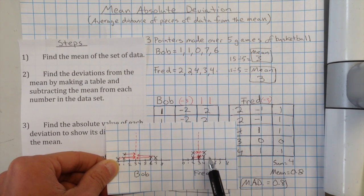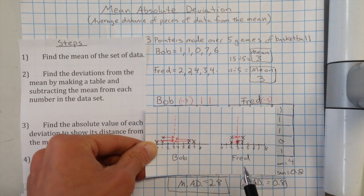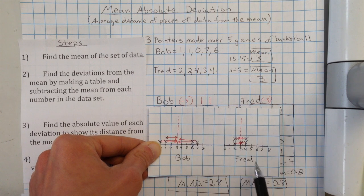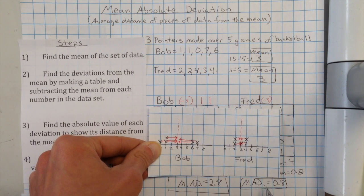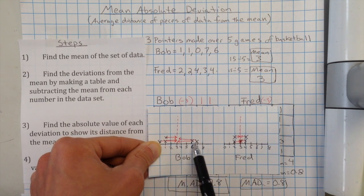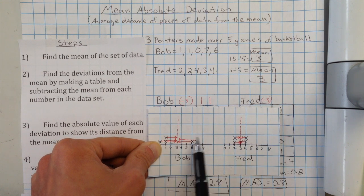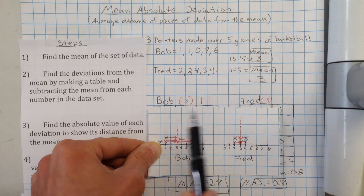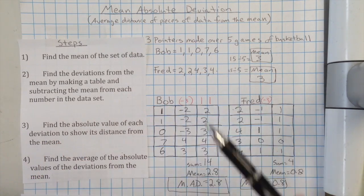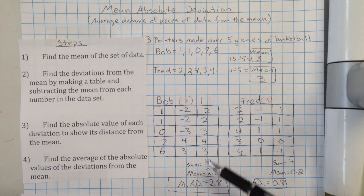So a lot of times he was really close to the mean. So his average distance from the mean was zero point eight. So if you are thinking who's more consistent, Fred is way more consistent. And he has a lower mean absolute deviation to show that. Whereas Bob was not nearly as consistent. So his mean absolute deviation is a much larger number. That mean absolute deviation, the bigger the numbers are, the more spread out they are, the larger it's going to be. So that's kind of what mean absolute deviation is. You can see some examples right here, and also the steps to how to calculate it. Good luck.